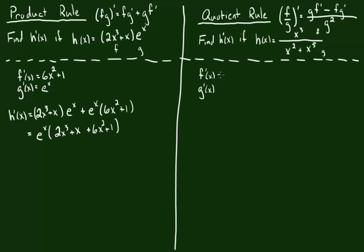You don't always have to write these down separately — I'm just doing it to be clear. The derivative of f is 3x squared. The derivative of g is 2x plus 5x to the fourth. Now that we have all the necessary derivatives, we can assemble it using the quotient rule.